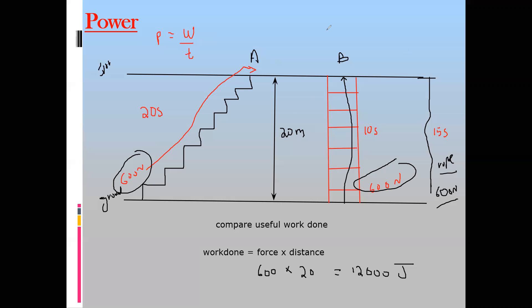Which one has greater power — A, B, or C? B is using greater power. Power is how much work done, or how much energy used, in one second. They have different powers but they are doing the same useful work done. Power equals work done divided by time. For A it is 12,000 divided by 20; for B it is 12,000 divided by 10; and for C it is 12,000 divided by 15. The one developing the highest power is taking the shortest time.